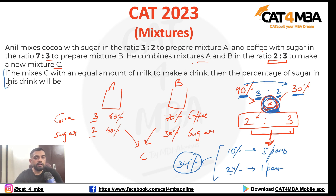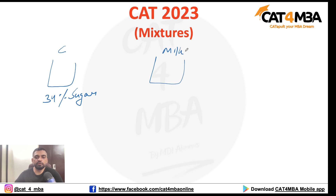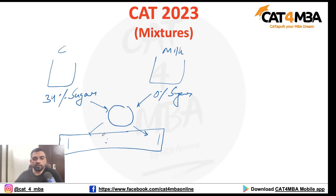Now, if we mix Mixture C with an equal amount of milk to make a drink, we need to find the percentage of sugar in this drink. Mixture C has 34% sugar, and milk has 0% sugar. They are mixed in the ratio 1:1. Using the same concept, the concentration ratio is the inverse of the volume ratio, which is again 1:1.